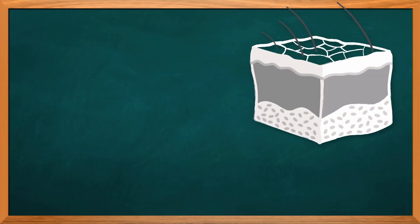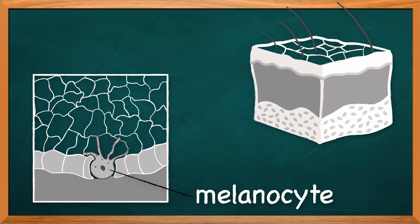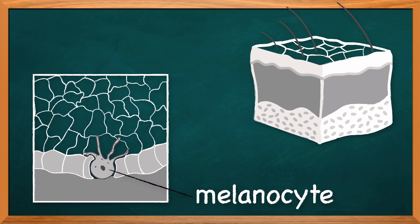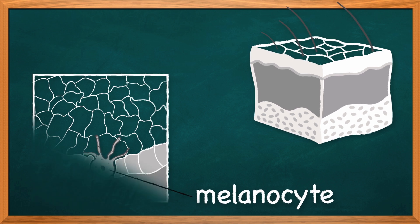Keratin is not the only ingredient in human hair. To create natural color, you need to add pigment, and this is done by cells in the skin called melanocytes. These melanocytes create the natural pigment known as melanin and deliver it to the cells that create keratin for your hair. Now this melanin comes in two varieties.